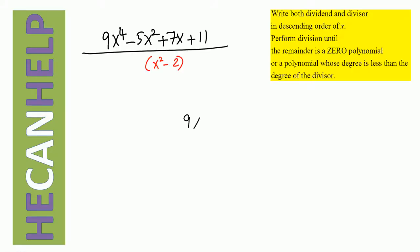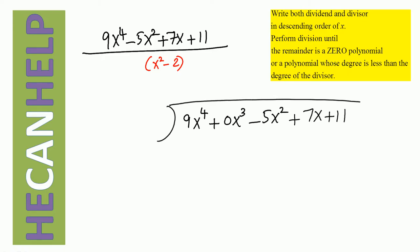So 9x to the power of 4 — the x cubed term is missing, so we just write 0x cubed — minus 5x squared, plus 7x, plus 11. The whole thing divided by x squared minus 2.